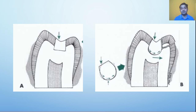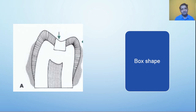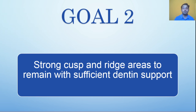Having proper walls and floors also gives you a box shape, which helps prevent movement of the restoration. Composite restorations ideally do not require a flat floor and box shape, because they strengthen the tooth structure through micromechanical bonding. So for composite in Class 1 or Class 2 cavities, flat floor and box shape are not strictly required.